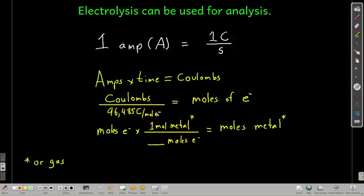We can also use electrolysis for quantitative analysis. To do this, we need to know a few things. First of all, the amp, capital A, is just how many coulombs per second pass through an area. So one amp is one coulomb. Coulomb is the unit of electric charge per second.